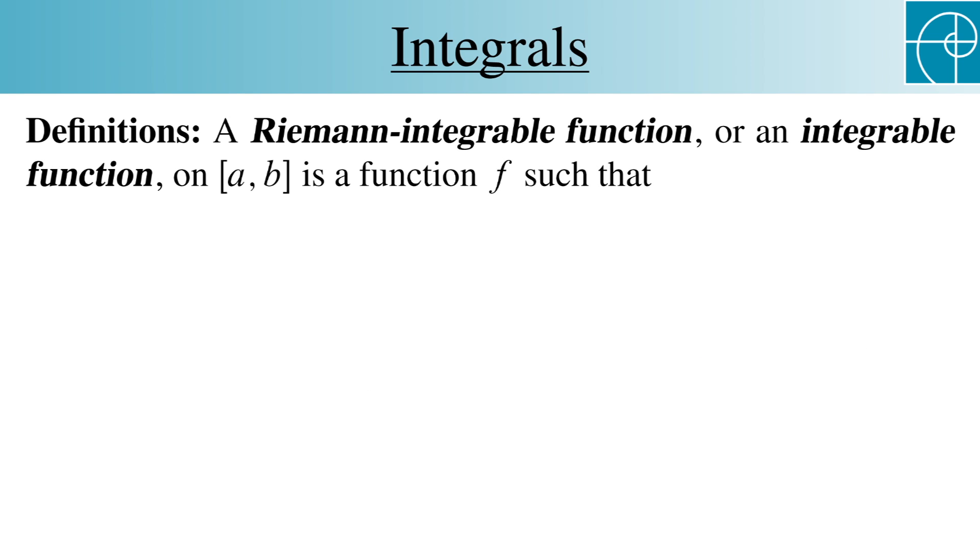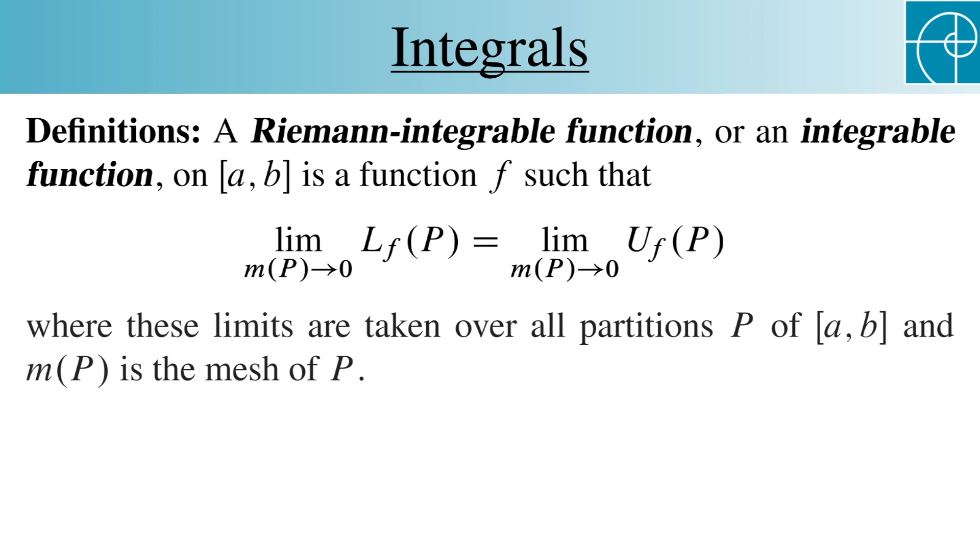A Riemann integrable function, which in this context we often shorten to integrable function since there's no ambiguity, on [a,b] is a function f such that this equality holds, where these limits are taken over all partitions p, and m is the mesh.